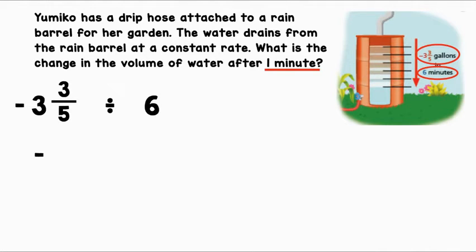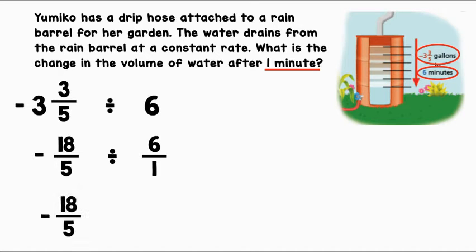Five times three plus three equals 18. Now let's keep the denominator. We're going to divide by six over one. To divide two fractions, we must use the multiplicative inverse. So negative 18-fifths times one-sixth.